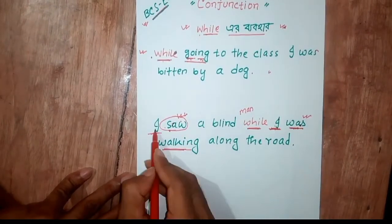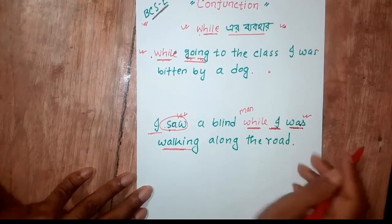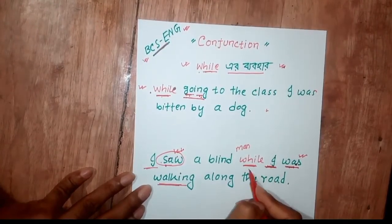The second sentence is, I saw a blind man while I was walking along the road.